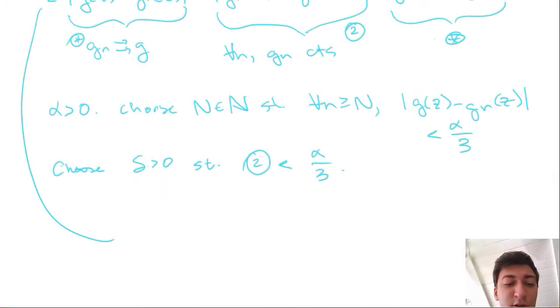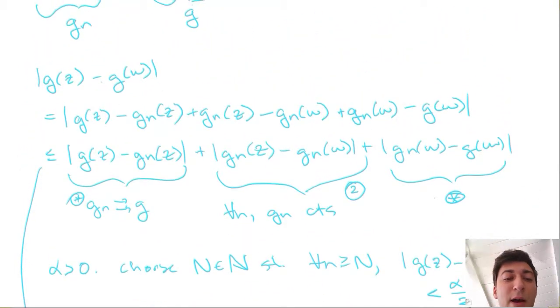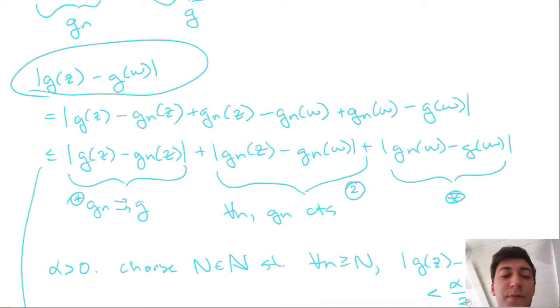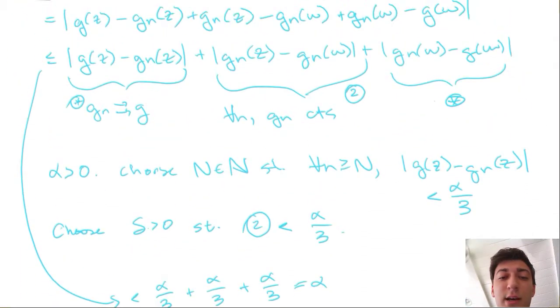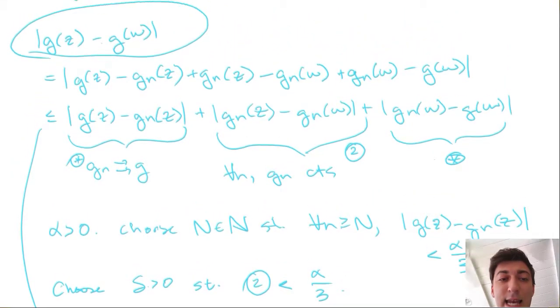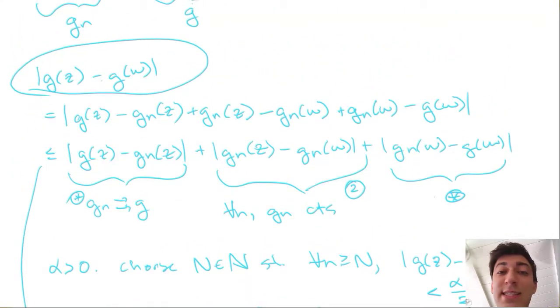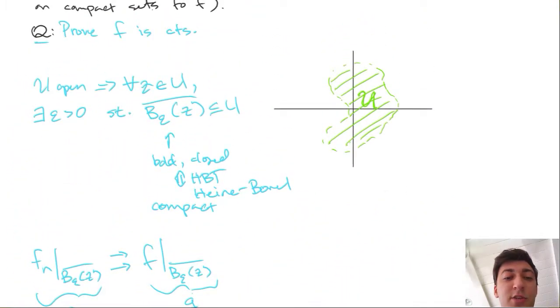But this is just alpha. And so we've gone ahead and we've bounded this quantity by choosing a proper delta and an N, which means that G itself must be continuous, which means that our original F, since we chose a Z arbitrarily in U, must be continuous at every Z in U, and therefore F is continuous.